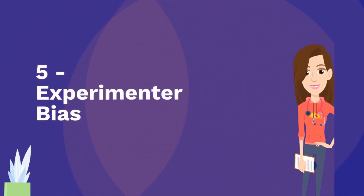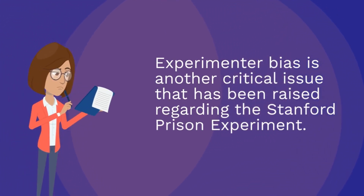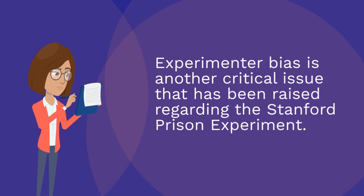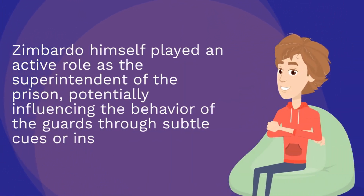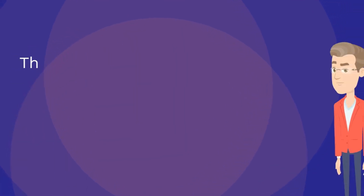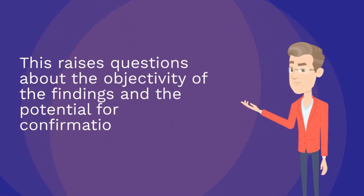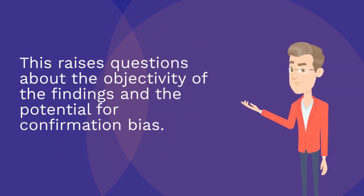Experimental bias. Experimental bias is another critical issue that has been raised regarding the experiment. Zimbardo himself played an active role as the superintendent of the prison, potentially influencing the behaviour of the guards through subtle cues or instructions. This raises questions about the objectivity of the findings and the potential for confirmation bias.